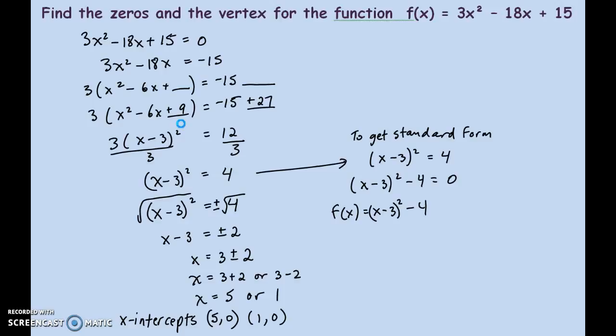And so, the final step is to get the vertex out of the brackets. The vertex is going to be positive three for the x, which comes from that bracket. And the negative four is the piece sitting on the end.